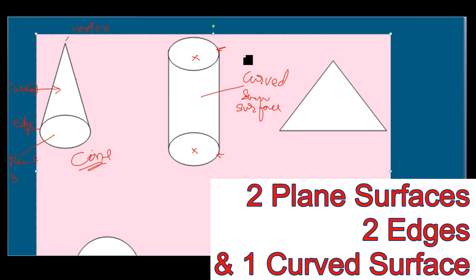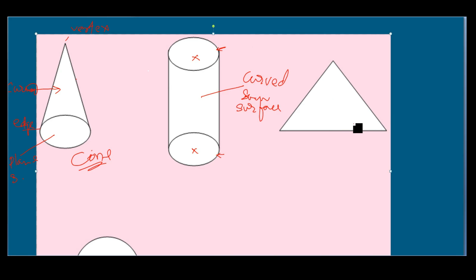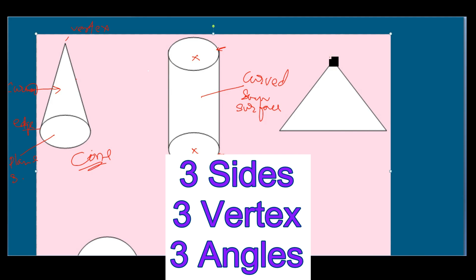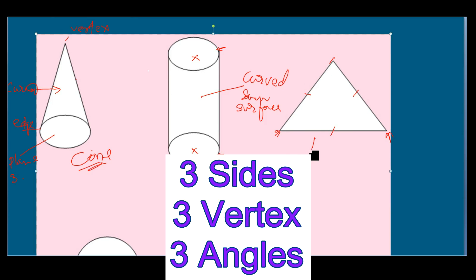The cylinder has no sides, only edges. Now let us come to the triangle. A triangle has three sides — one, two, three — and three vertices — one, two, and three. This shape is called a triangle.